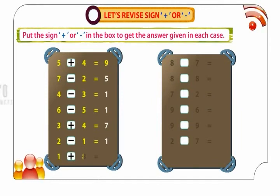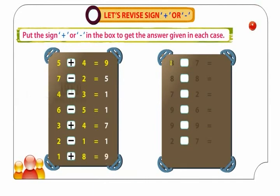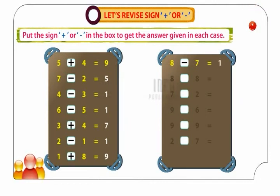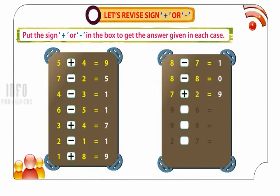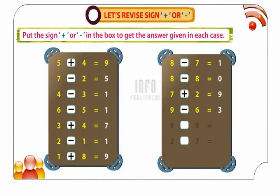1 plus 8 is equal to 9. 8 minus 8 is equal to 0. 7 plus 2 is equal to 9. 9 minus 6 is equal to 3. 9 minus 9 is equal to 0.